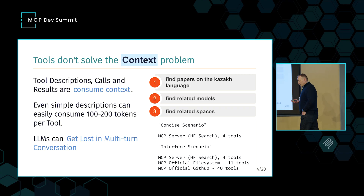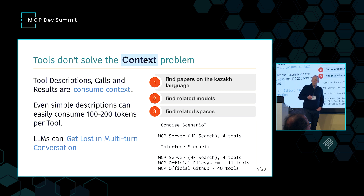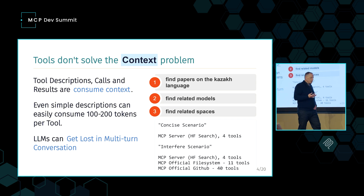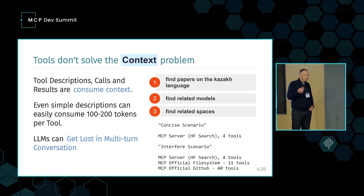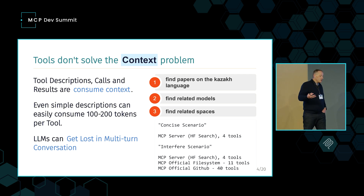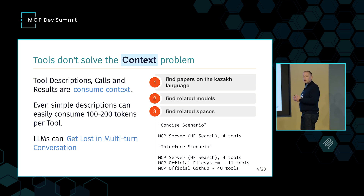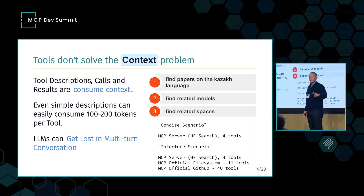Tools do come with some drawbacks. Tool descriptions and tool results consume context. I ran a short experiment: I set an agent up to search for papers on the Hugging Face Hub, find if there were any models for it, and find out if those models were hosted on Spaces — three fairly straightforward instructions — and ran it in two different scenarios.